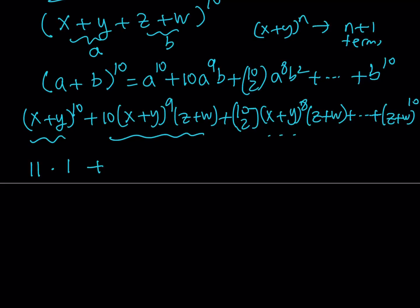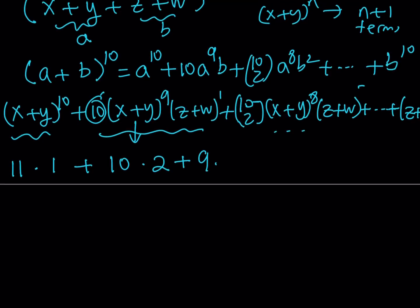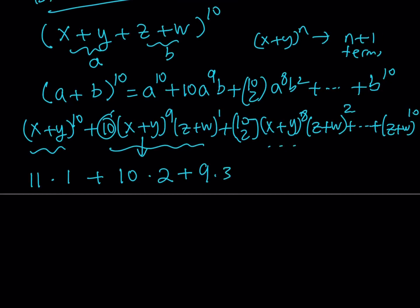x plus y to the 9th power is going to have 10 terms. And z plus w — because this is to the first power — is going to have two terms. I'm supposed to multiply those because x, y, z, w are all different, and we're multiplying a sum with 10 terms by a sum with two terms, which generates 10 times 2 terms. Then for the next piece, x plus y to the 8th gives 9 terms, and z plus w squared gives 3 terms. All the way to the end, I get one term from x plus y to the power zero and 11 terms from z plus w to the 10th power.